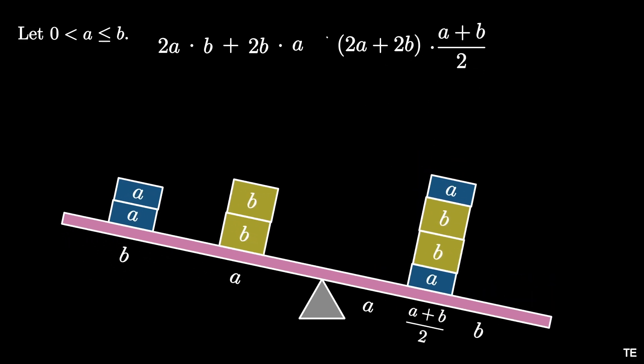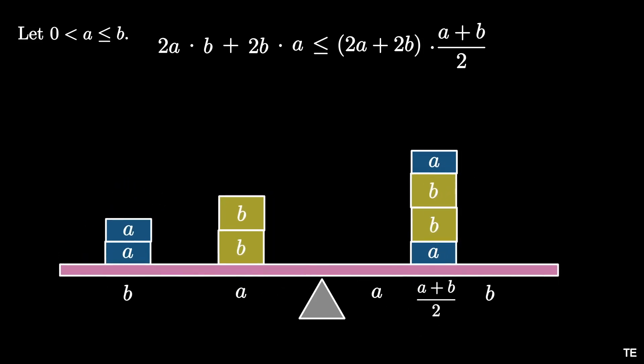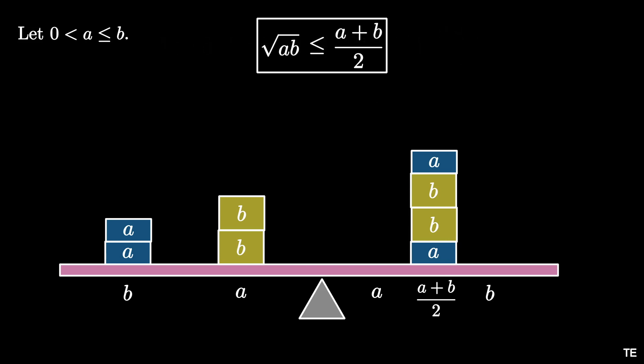Because the system rotates clockwise, the left moment is less than or equal to the right moment. This inequality can be rewritten as 4ab ≤ (a + b)², which implies that √(ab) ≤ (a + b)/2. This is the arithmetic mean–geometric mean inequality.